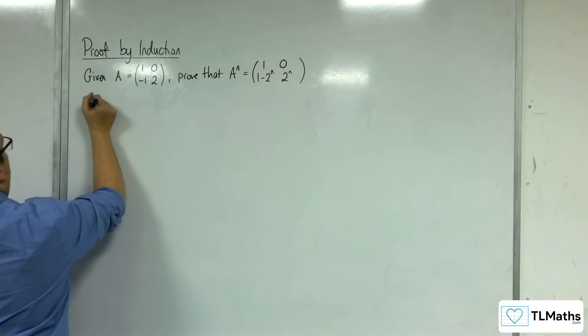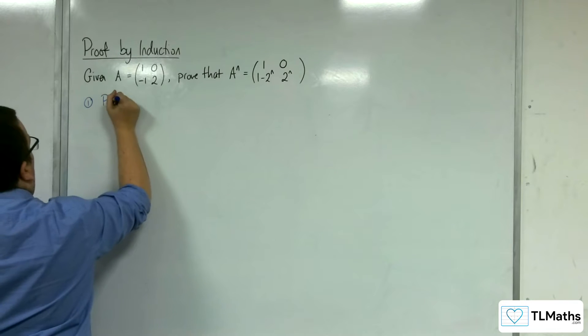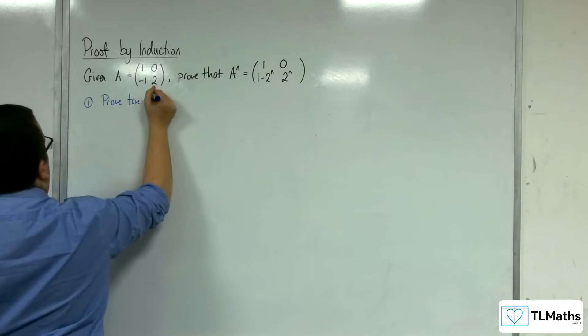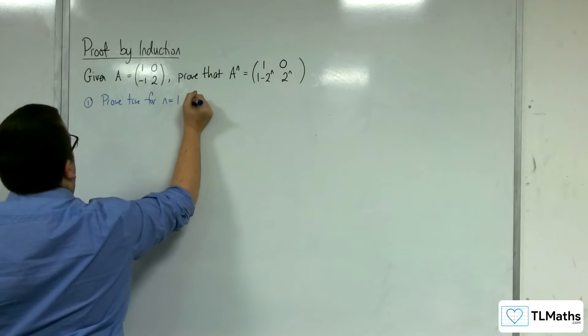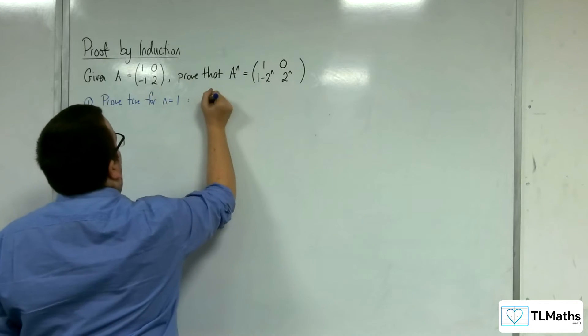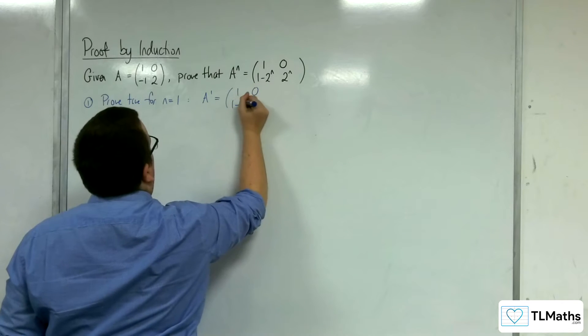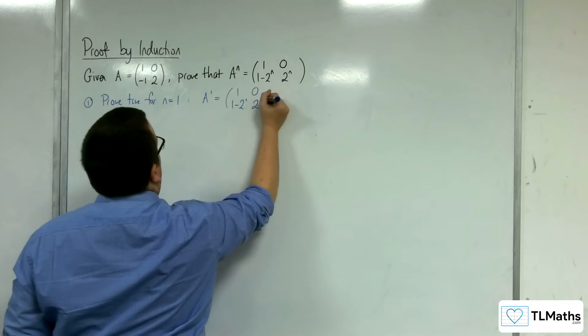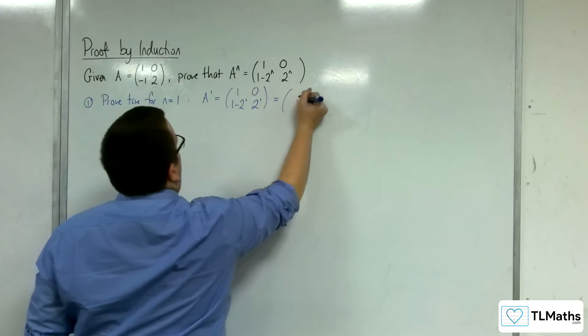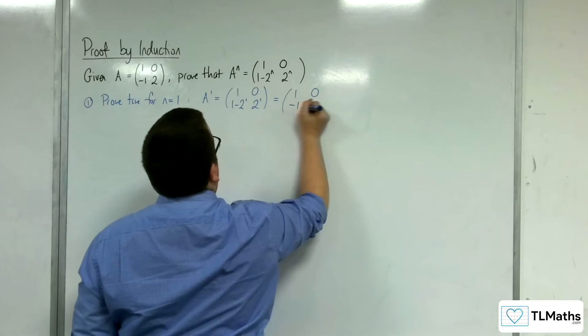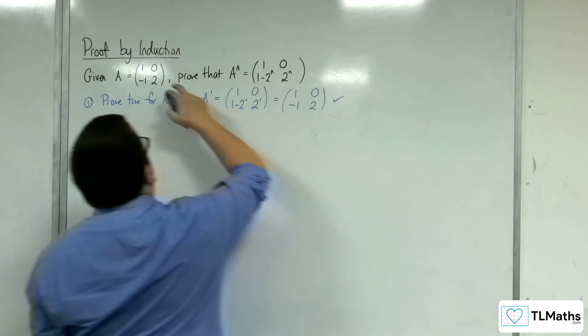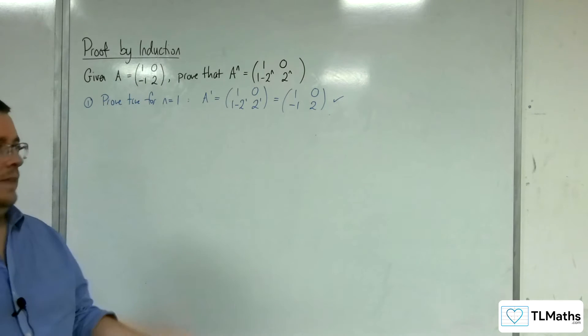Step 1: prove true for n equals 1. A to the 1 equals (1, 0; 1 - 2^1, 2^1), and that leaves us with (1, 0; -1, 2), which is the matrix A. So that's done.